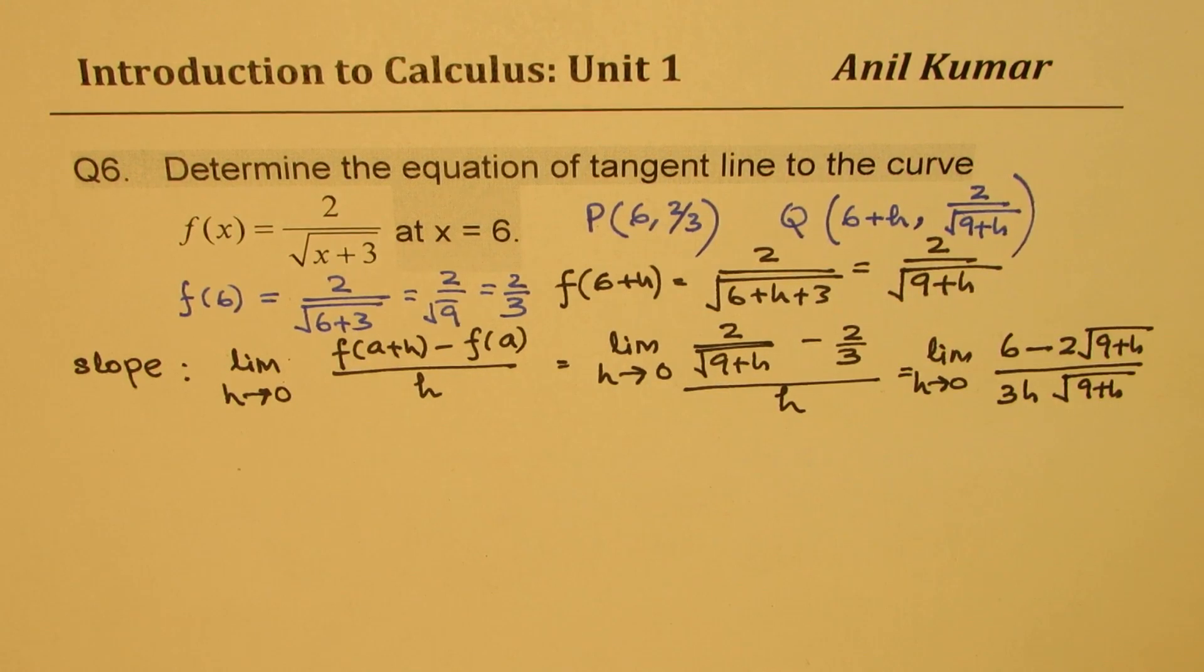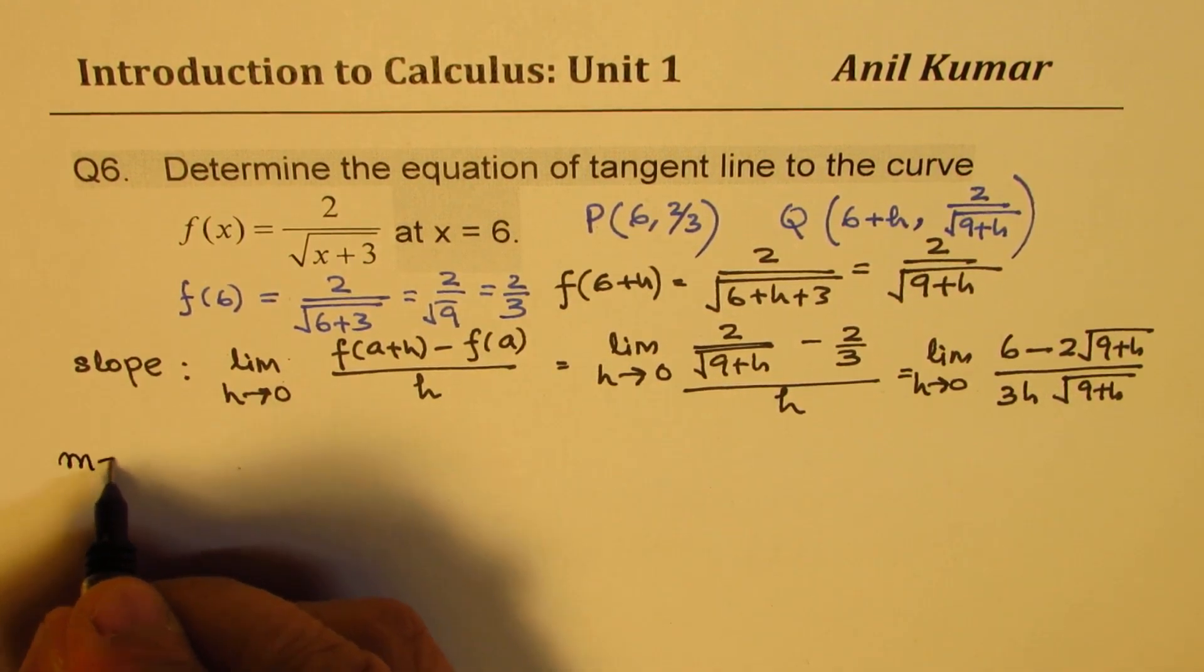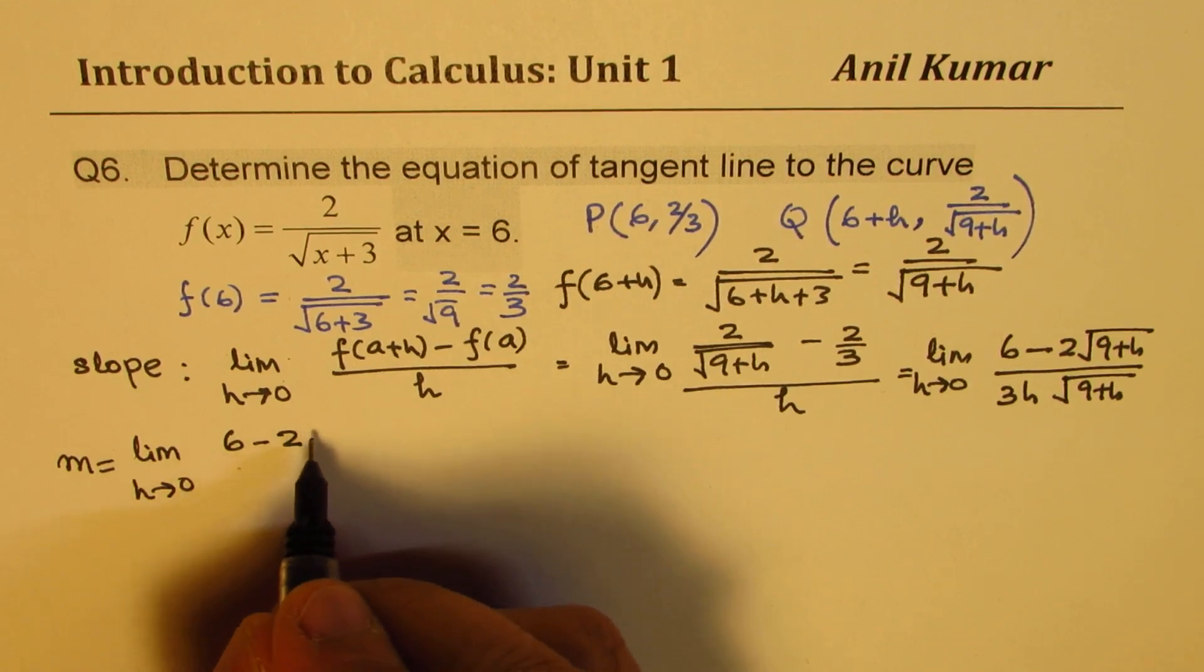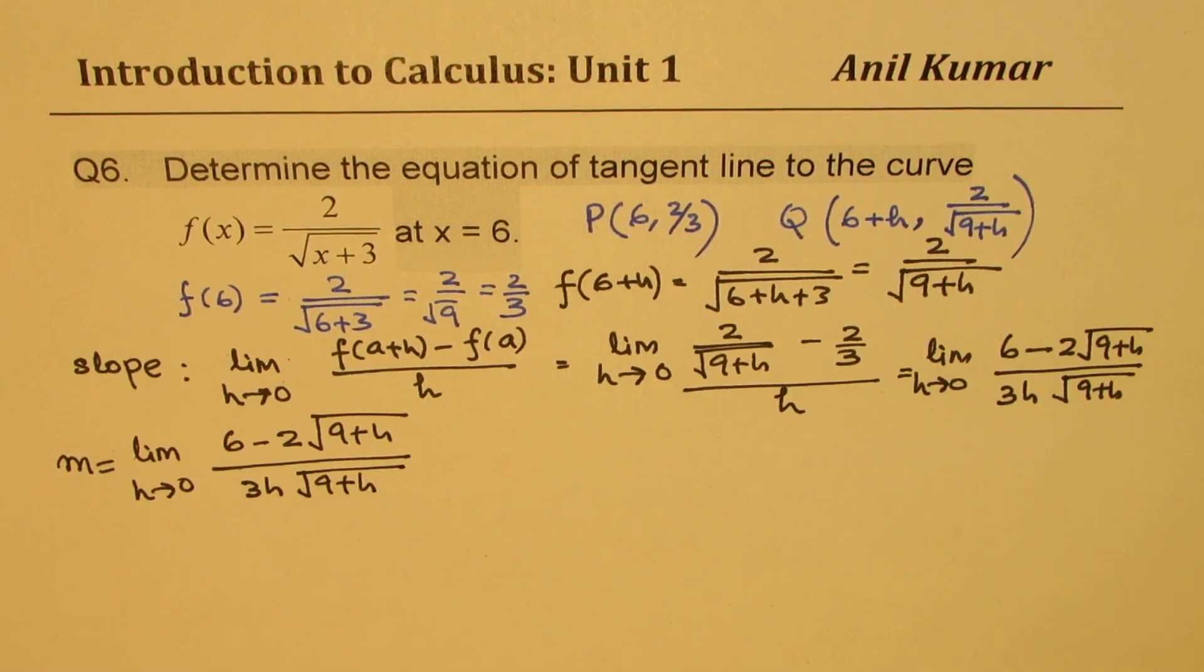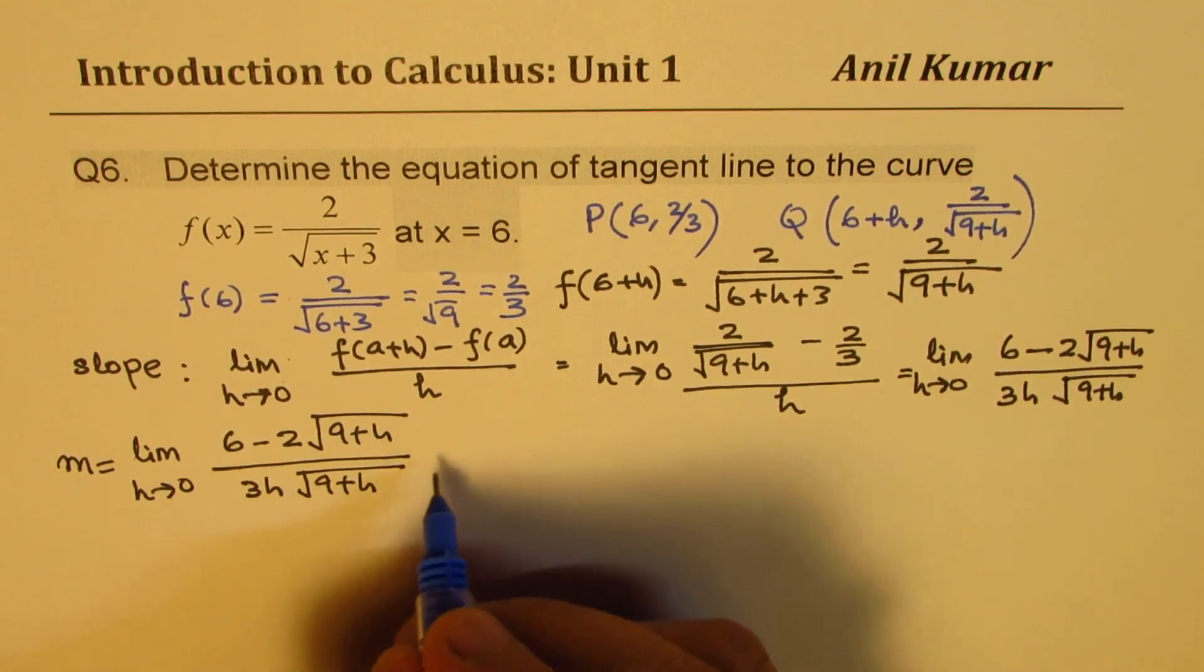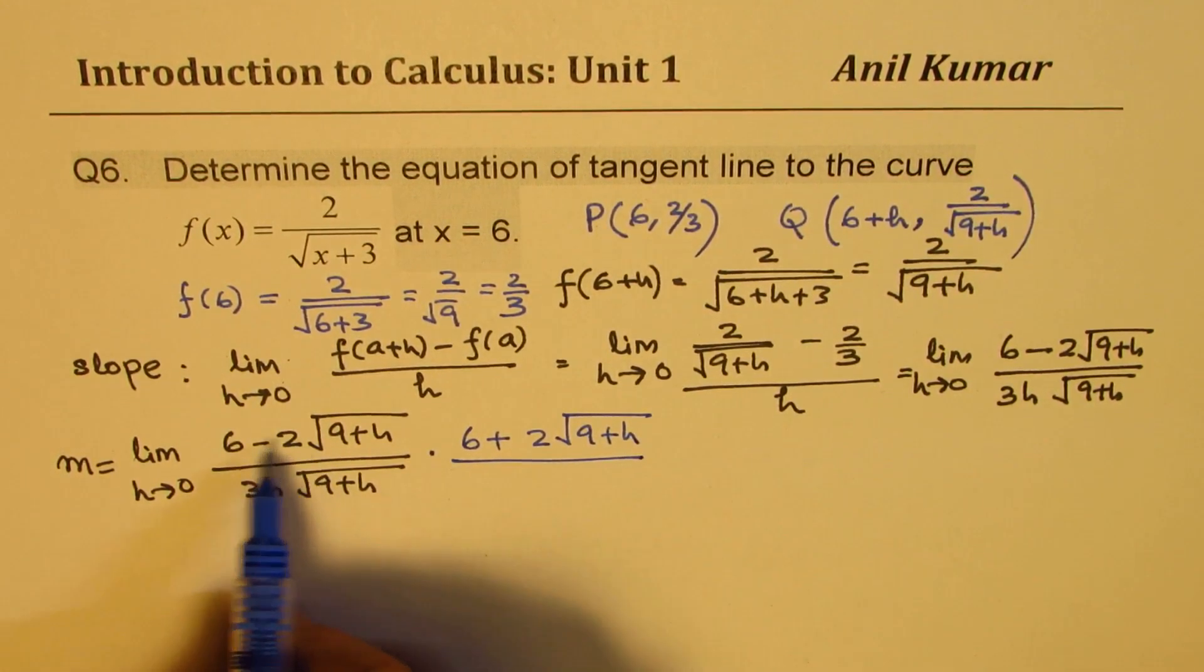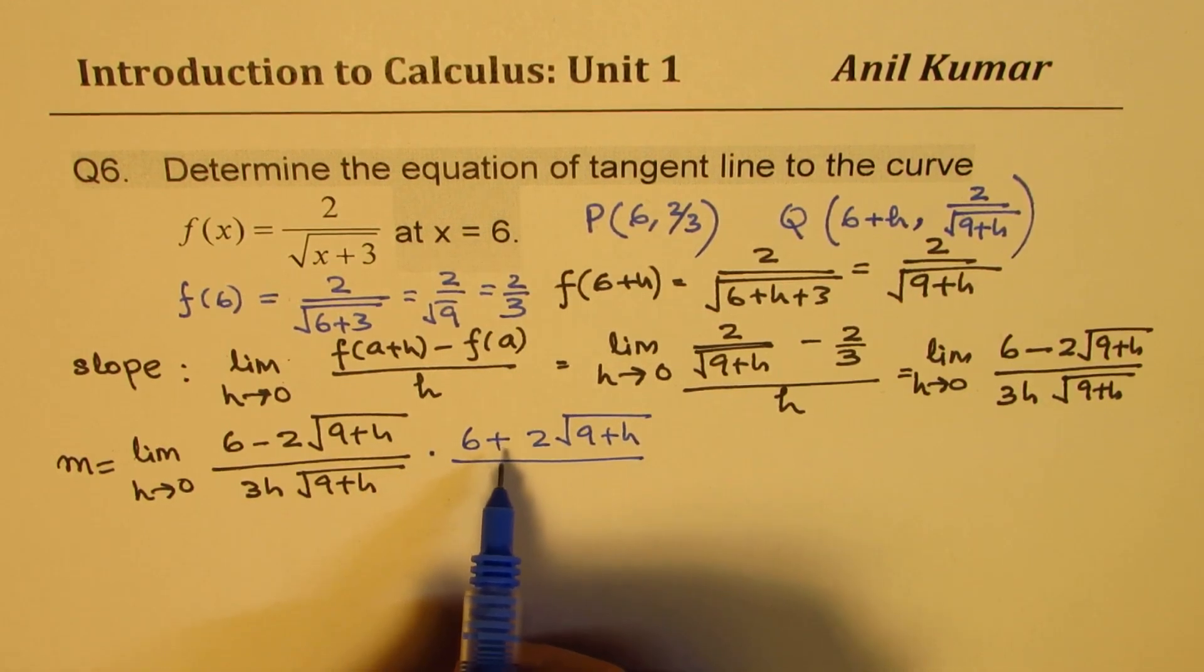Now to solve it further, what we need to do? We need to rationalize the expression. So we'll rationalize and say slope m = limit h approaches 0: (6 - 2√(9+h))/(3h√(9+h)). Rationalize means we'll multiply and divide by the conjugate of this, which is 6 + 2√(9+h). We could have simplified this by taking 2 common, so we'll be working with smaller numbers in that case, but I haven't done so here. But you could definitely do it.